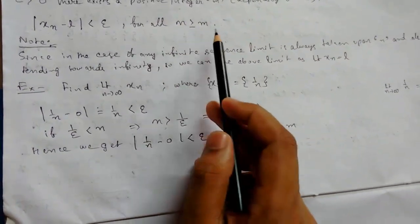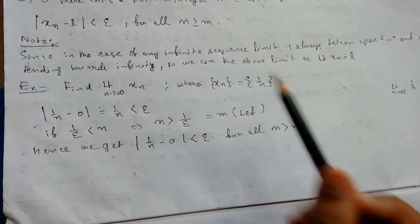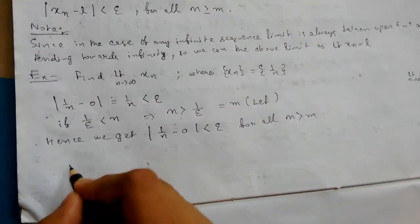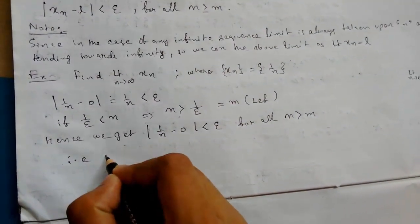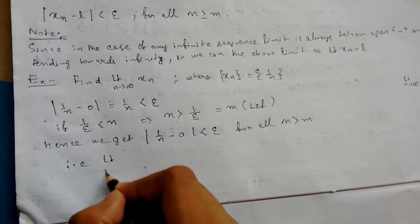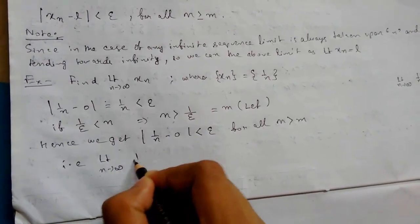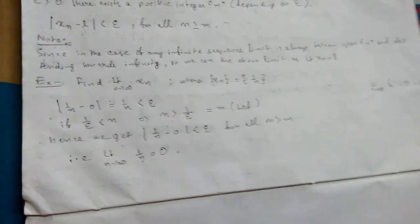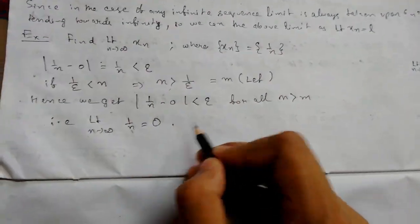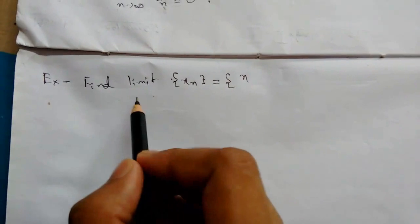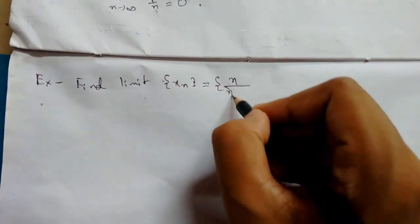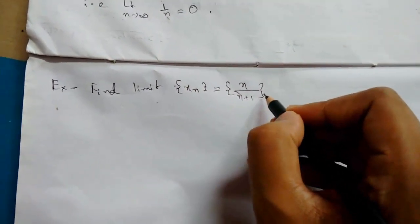Hence we get |1/n − 0| < ε for all n > M. Note: it is n greater than M with no equals sign here, unlike the general definition which uses greater than or equal to. Therefore, the limit as n tends to infinity of 1/n equals 0. This is our answer.